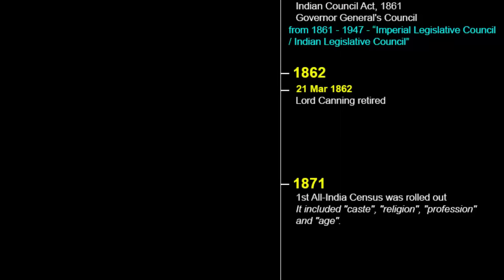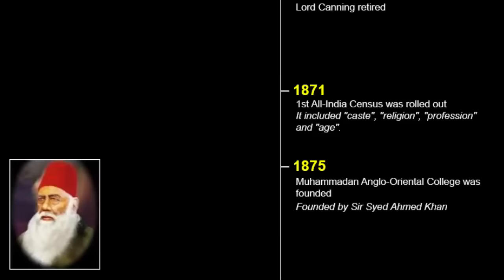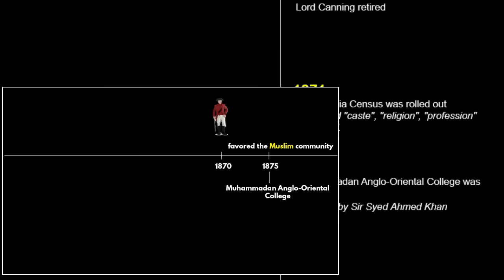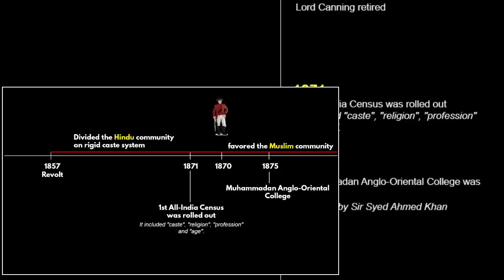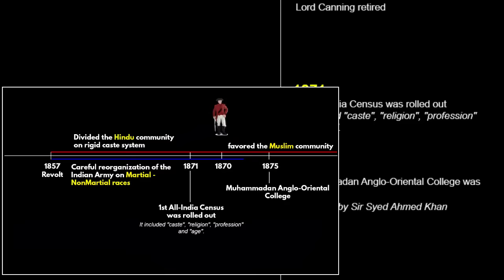The British had that anger against the Muslim community — because both Hindus and Muslims were united during the 1857 revolt — and this translated into oppressing the Muslim community till 1870. The modern education culture did not spread to the Muslim community until 1875, when Mohammedan Anglo-Oriental College was founded by Sir Syed Ahmad Khan — the first modern institution of higher education for Muslims in India. After 1870, the British started favoring the Muslim community. And after the 1857 revolt, the British divided the Hindu community on the basis of a rigid caste system, as evident from the 1871 census, making Indians aware of the British intentions.